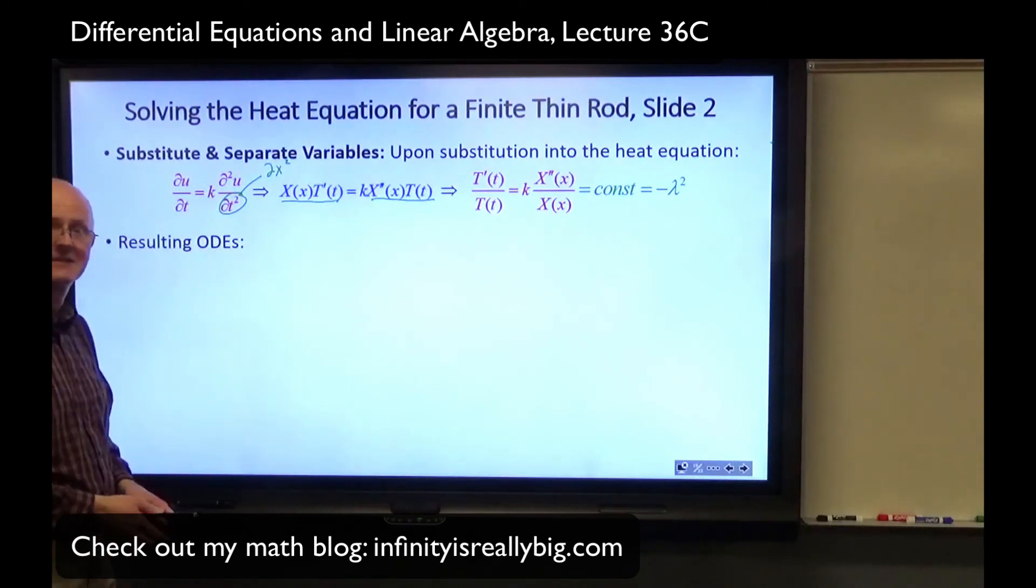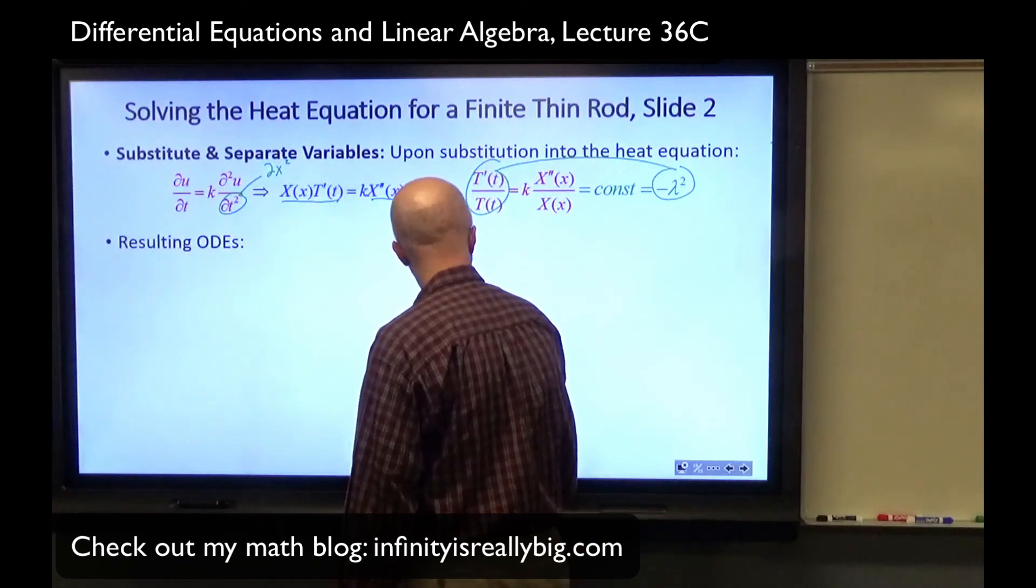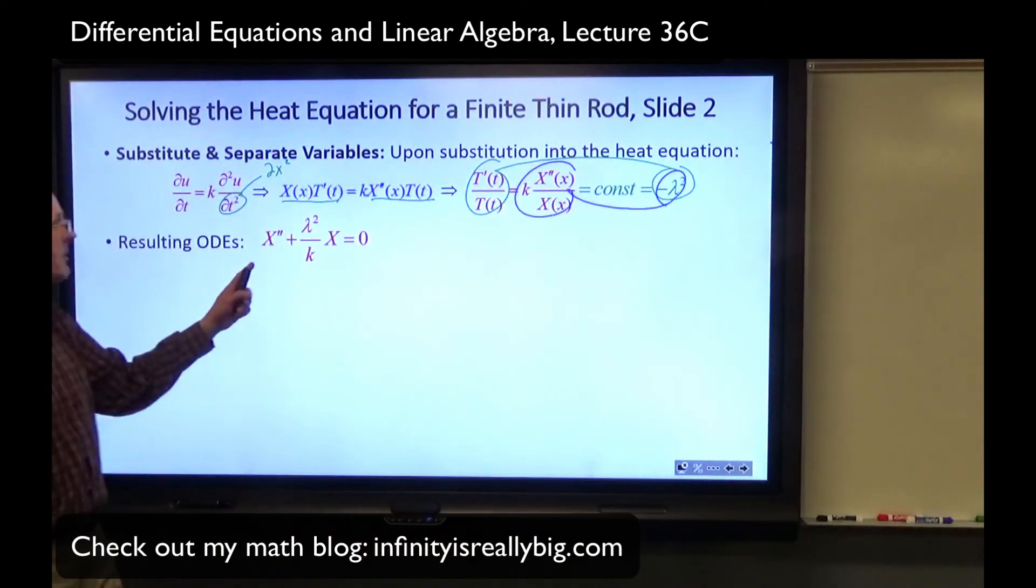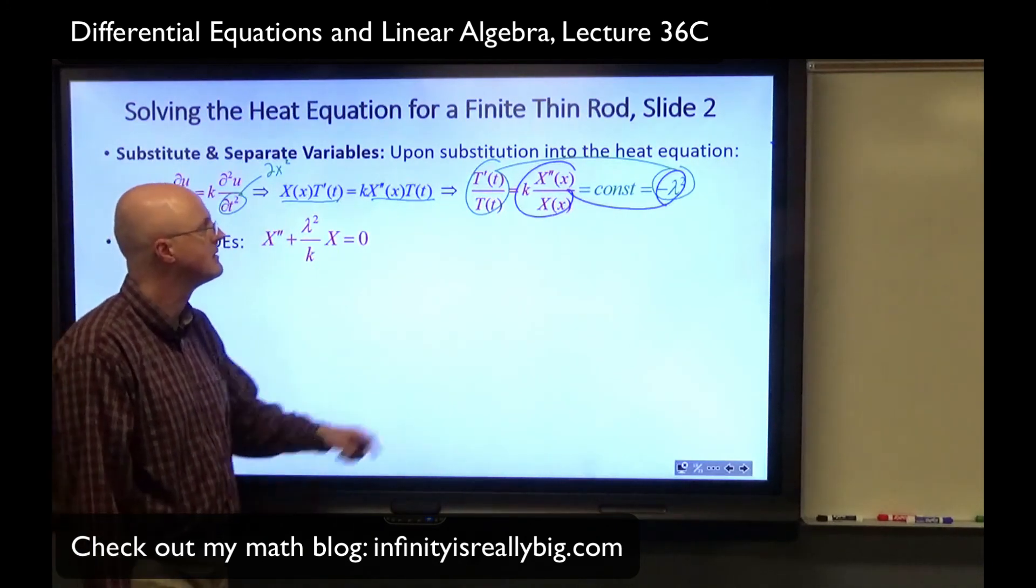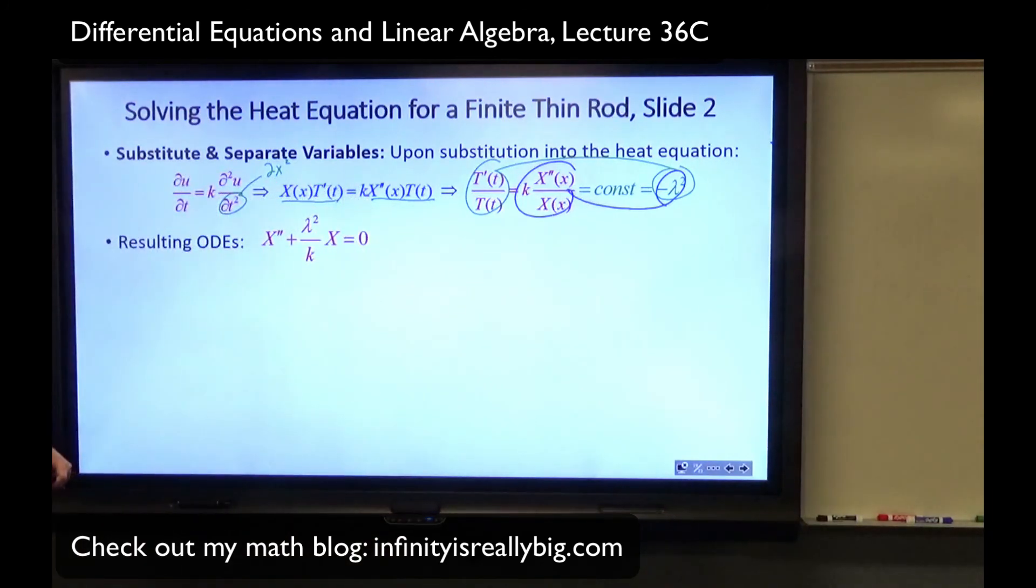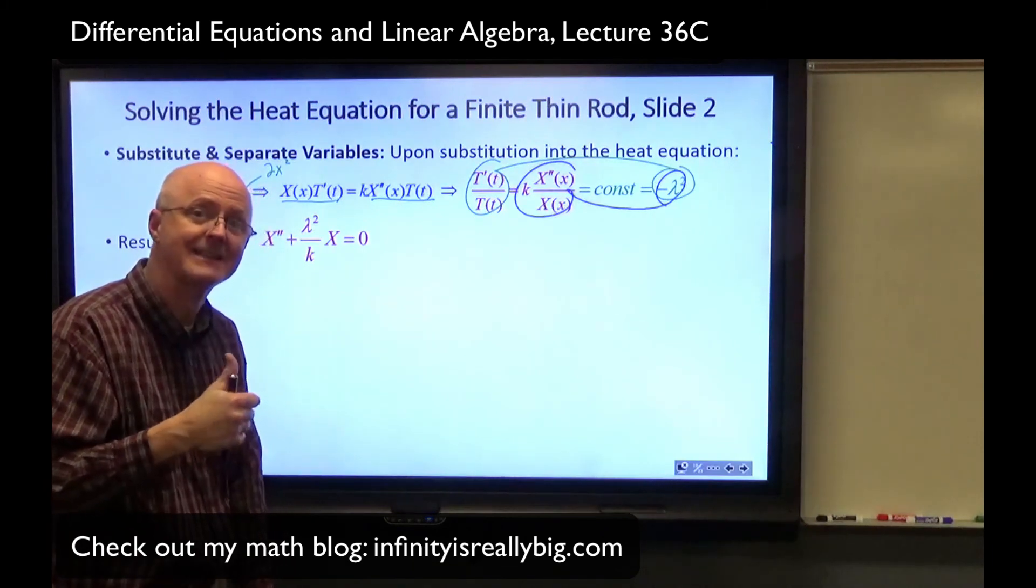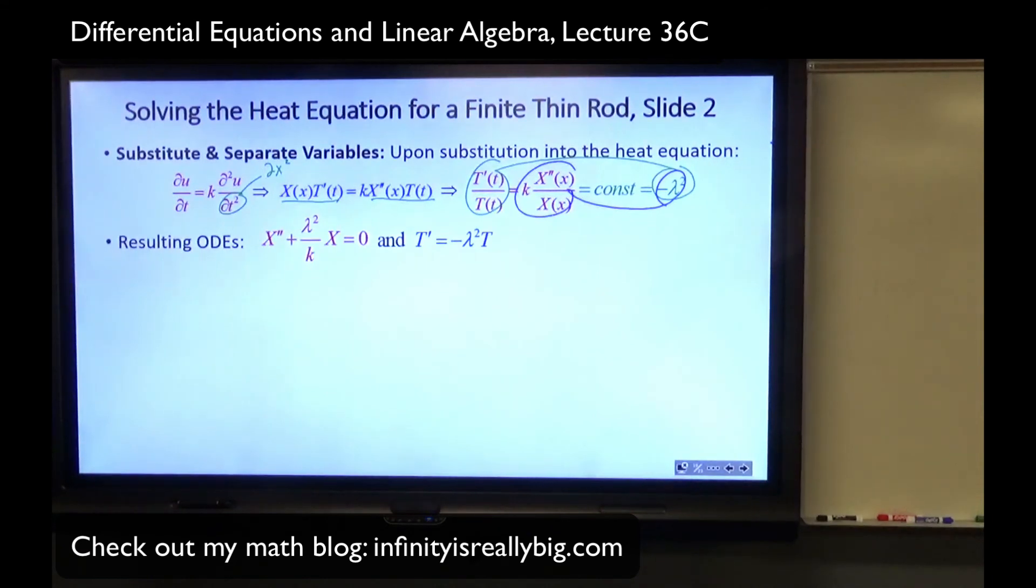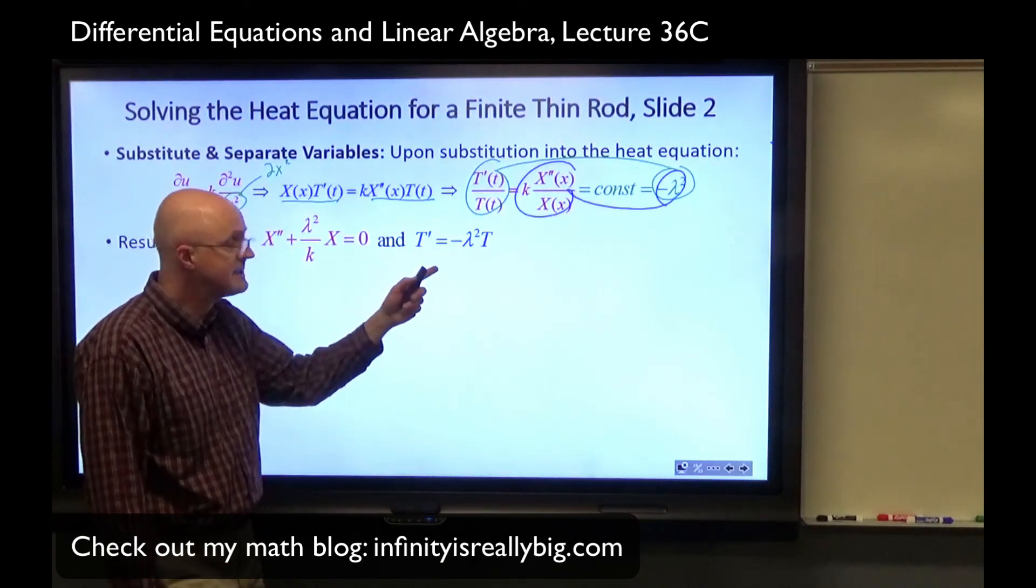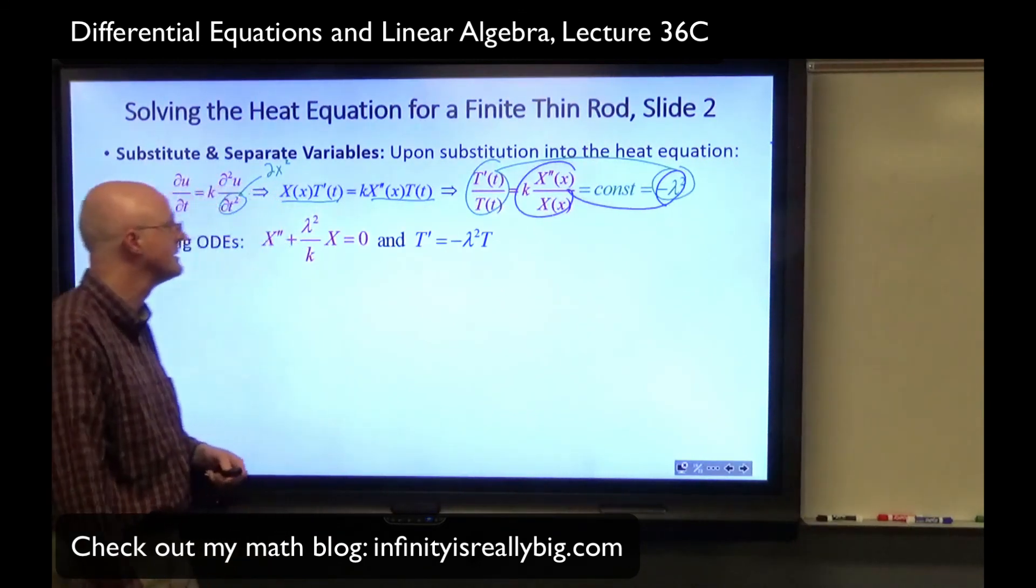What are the resulting ODEs? Ordinary differential equations. We use ordinary differential equations for partial differential equations. Set this equal to negative lambda squared, and set this whole thing equal to negative lambda squared. We get two ordinary differential equations in terms of x. X double prime plus lambda squared over k times X equals 0. Multiply both sides by capital X of x. Divide both sides by k. That looks like a second-order harmonic oscillator, undamped. Its solutions are going to involve cosines and sines. That's where the Fourier series are going to come from. And the other one's a first-order equation. Capital T prime is negative lambda squared capital T. The solution is going to be exponential decay.